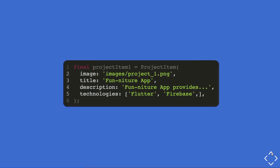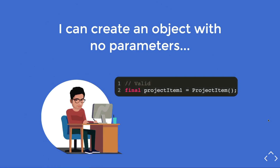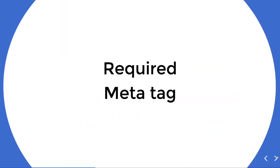You're confident your code will pass this time, but your senior developer points out that you can create an object with no parameters and it's still considered valid. Creating a ProjectItem without any parameters would actually cause an error at runtime. He suggests you look up the required meta tag.